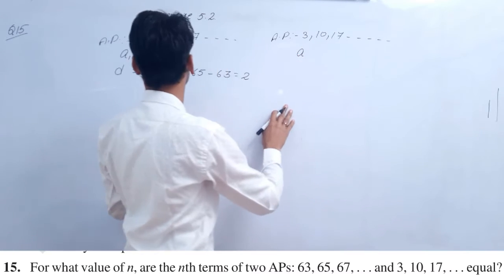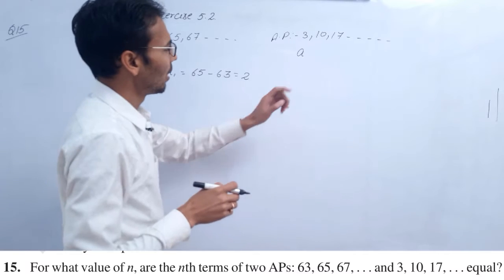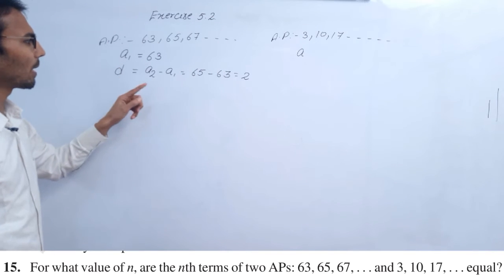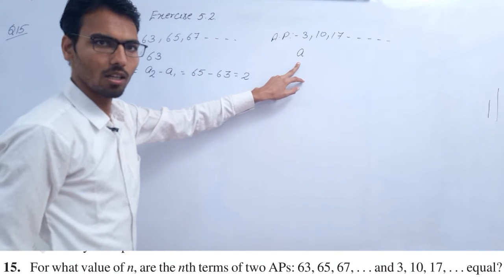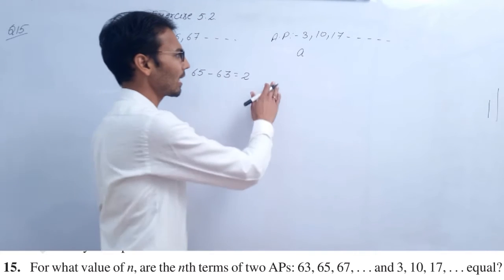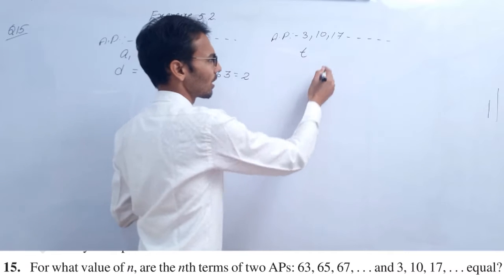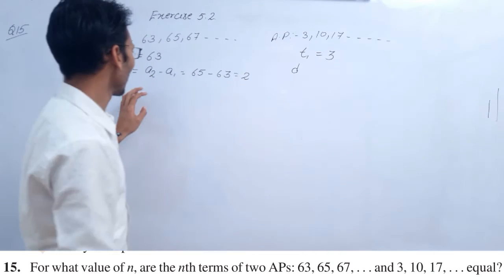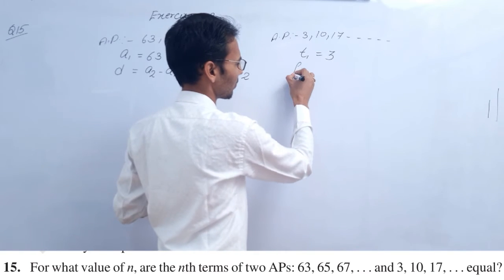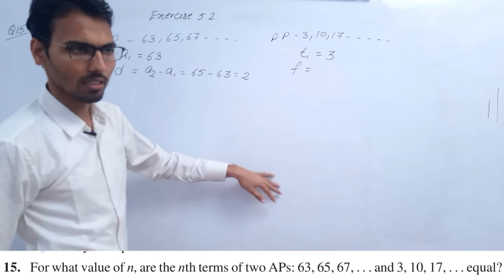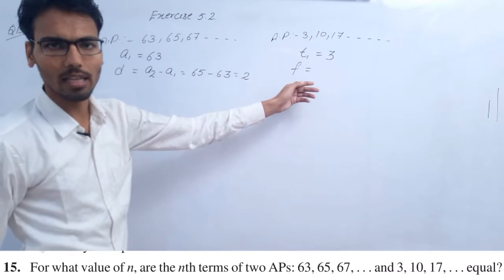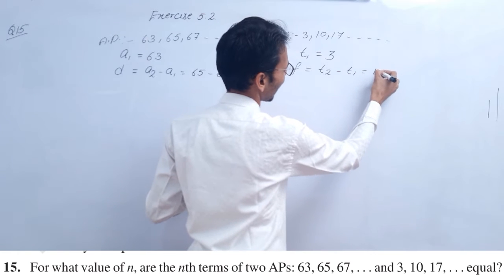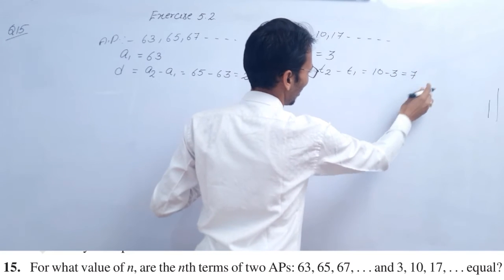Now for the second AP, the first term is 3. Let me denote this differently to avoid confusion. The common difference d here is T2 minus T1, which is 10 minus 3, equal to 7. So for the two APs, we have the first terms and common differences.